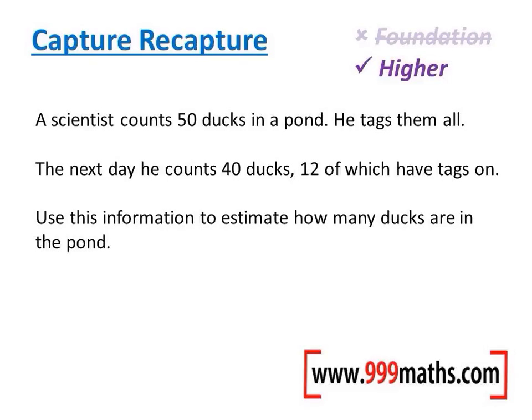This question is all about proportion and making things equal. The scientist counts 50 ducks in a pond and puts a tag on them all. The next day he counts 40 ducks, 12 of which have tags on. We need to use this information to estimate how many ducks are in the pond.